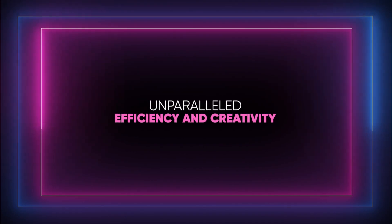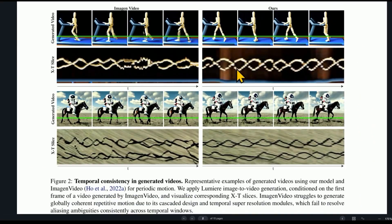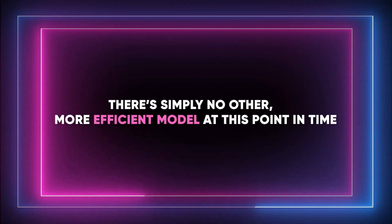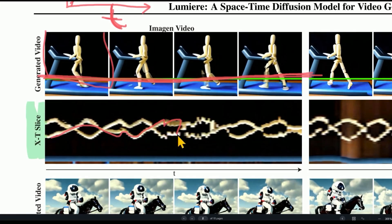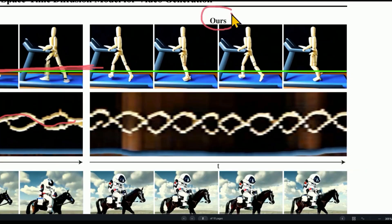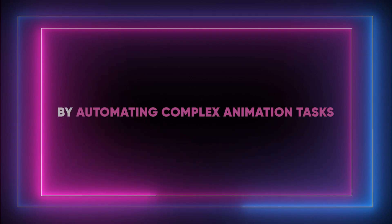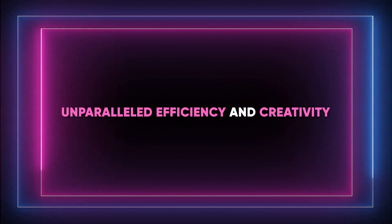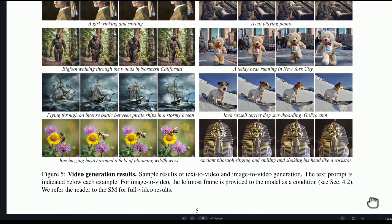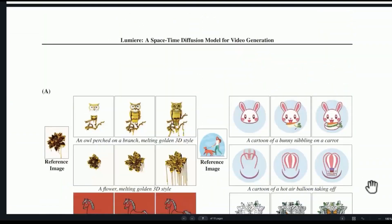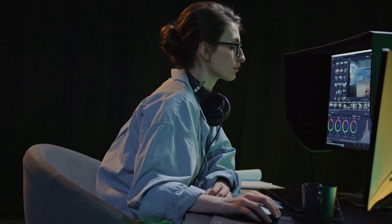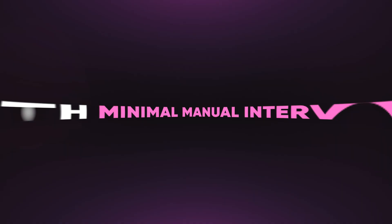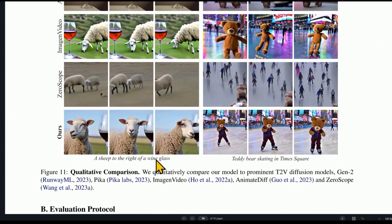Harnessing its advanced space-time UNET architecture, Lumia transforms the video production landscape by offering content creators unmatched efficiency and creative freedom. This groundbreaking technology enables Lumia to excel in generating videos from text prompts, significantly streamlining the video creation process. By automating complex animation tasks, Lumia allows users to focus on the storytelling aspect, fostering an environment ripe for unparalleled efficiency and creativity. Lumia's prowess lies not just in its ability to create videos quickly, but also in its stylized generation capabilities. Content creators can now produce videos that aren't only visually appealing, but also consistent in style and tone, all with minimal manual intervention. This level of artistic control was previously unattainable in traditional video production methods.